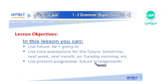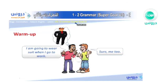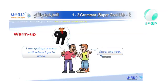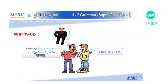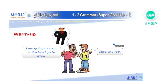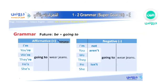Let's begin with a warm-up. The first boy says, 'I am going to wear a suit when I go to work.' The other boy says, 'Sure, me too.' So this boy is planning to do something in the future — he's planning to wear a suit when he goes to work. So we use 'going to' to talk about the future.